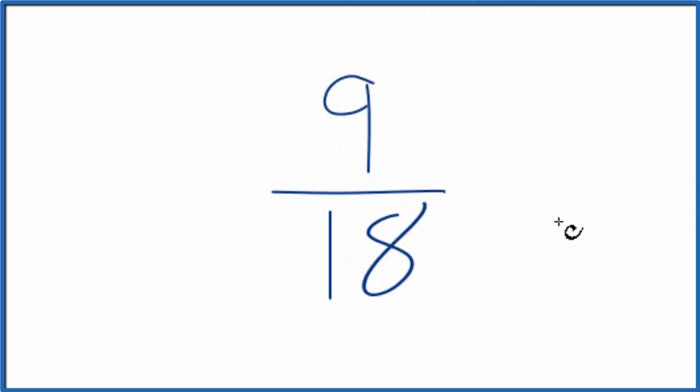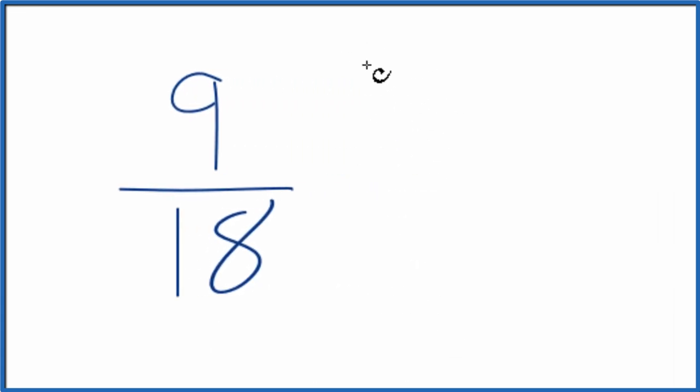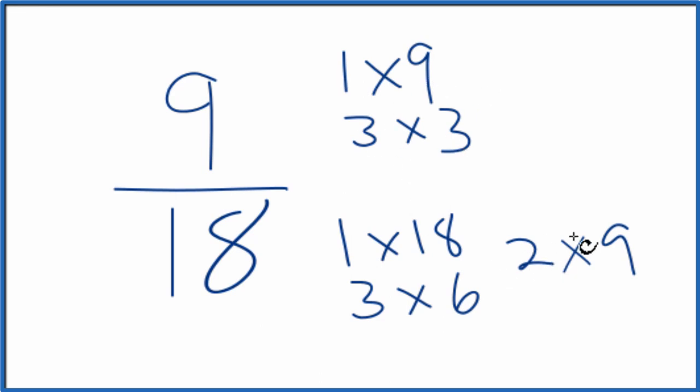So we need to find a common factor, something that goes into both 9 and 18. So here are the factors for 9 and 18. I look at the factors for 9 and then 18. I see 1 times 9 and 2 times 9. So 9, that's the biggest common factor.